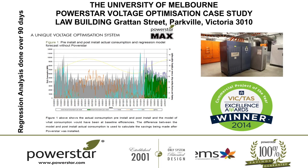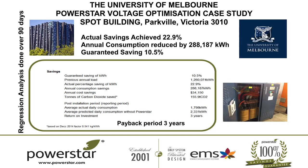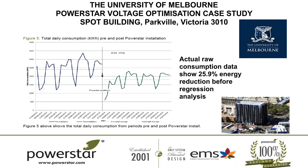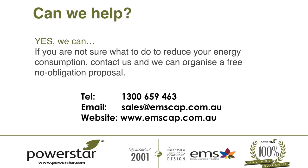We're conservative in what we say to clients because we want the actual number to be higher, with a payback period under four years verified through IPMVP regression analysis. That's a 1,150 kVA dynamic unit installed at the University of Melbourne. Also, the SPOT building in Carlton Parkville achieved 23% energy saving — the client had VSDs, LED lighting, compact fluoros, and high-frequency fluoros, and asked what we could save. We told them 10.5% and actually achieved 23%, because their average voltage was 249 volts. On the raw data it was nearly 26% energy saving. So thank you.